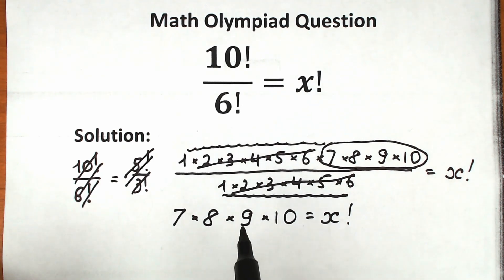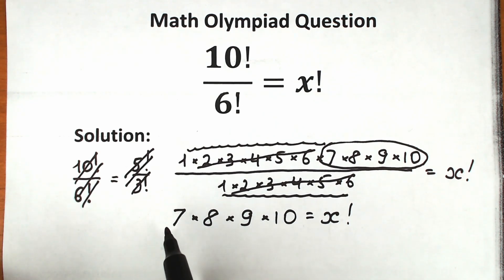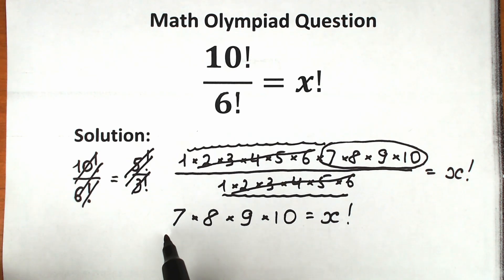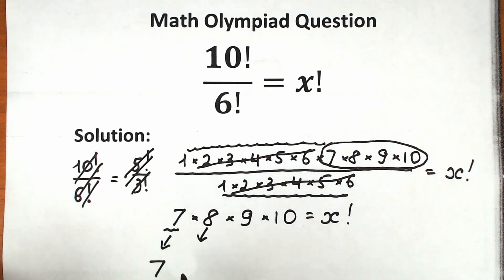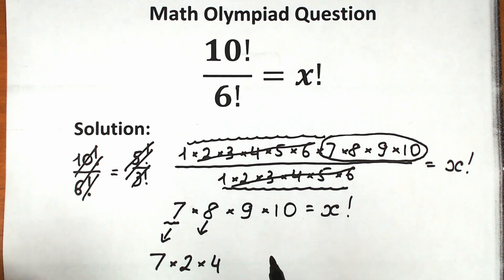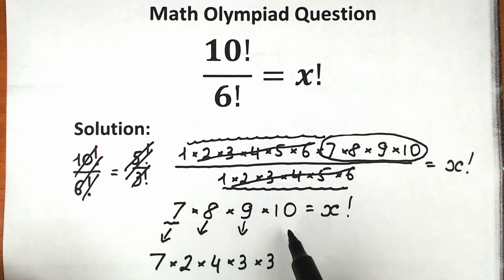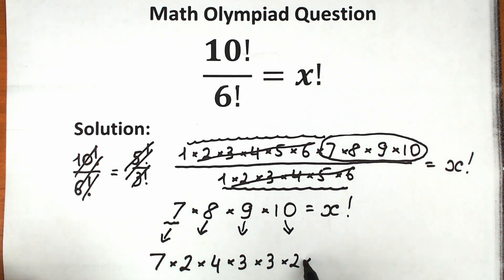Next, let's rewrite 8, 9, and 10 in another way. 7 stays as 7. We can write 8 as 2 × 4, write 9 as 3 × 3, and write 10 as 2 × 5. So we have 7 × 2 × 4 × 3 × 3 × 2 × 5 = x factorial.